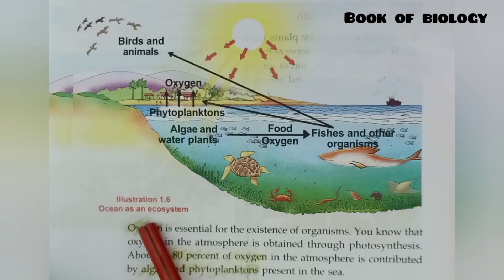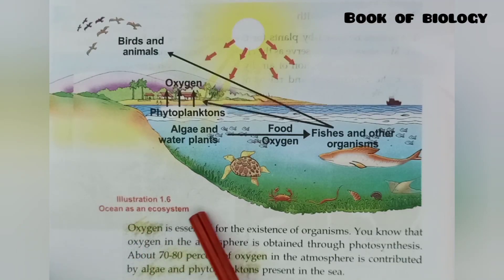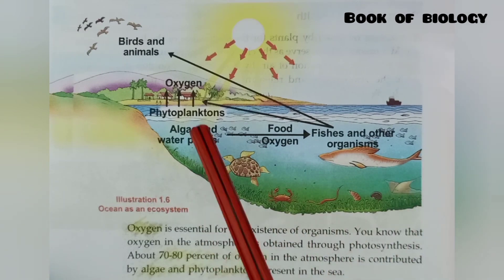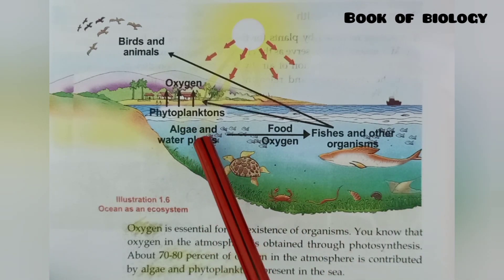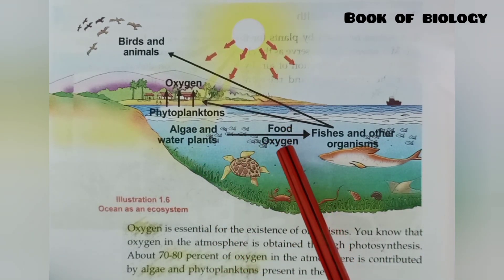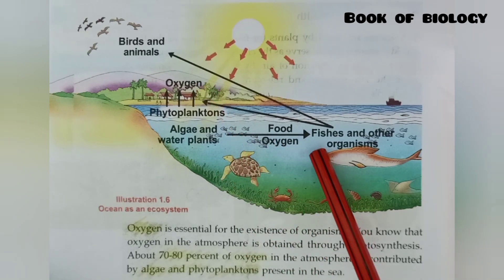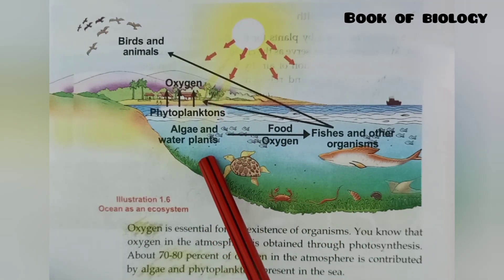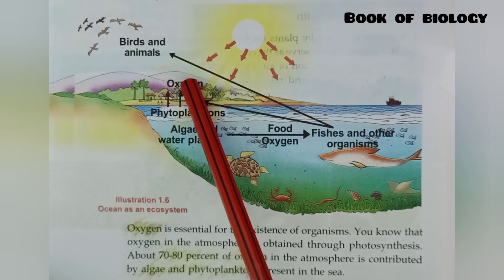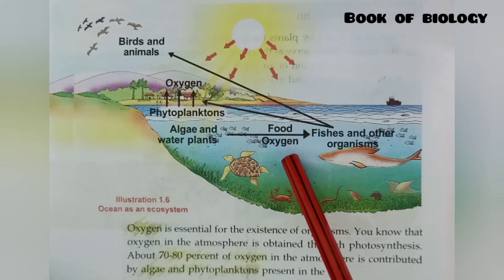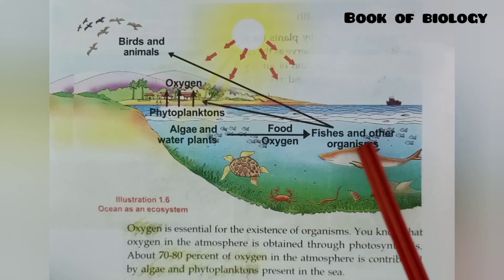Observe this illustration of the ocean as an ecosystem. Here you can see phytoplanktons, algae, and water plants. They are producing food and oxygen after photosynthesis. The oxygen is then released into the atmosphere.